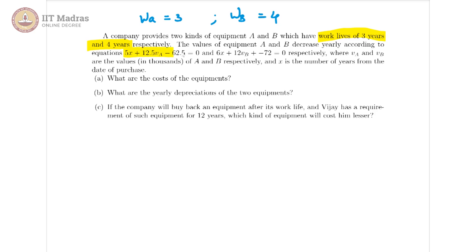So these are our equations where VA is supposed to be the value of A and VB is supposed to be the value of B in thousands respectively, and x is the number of years for which that value is applicable.